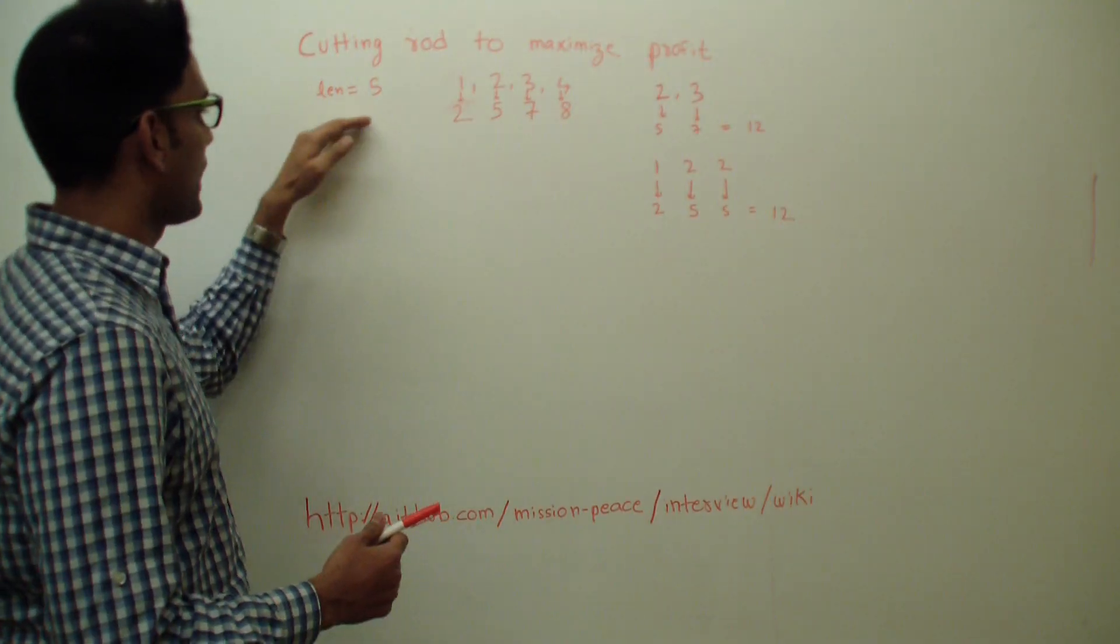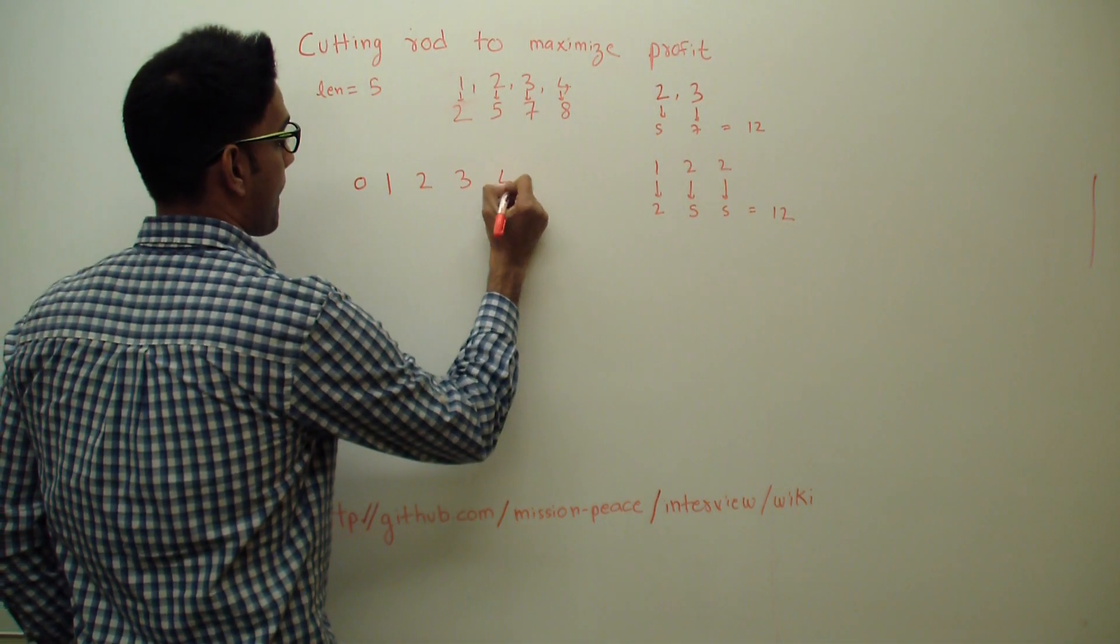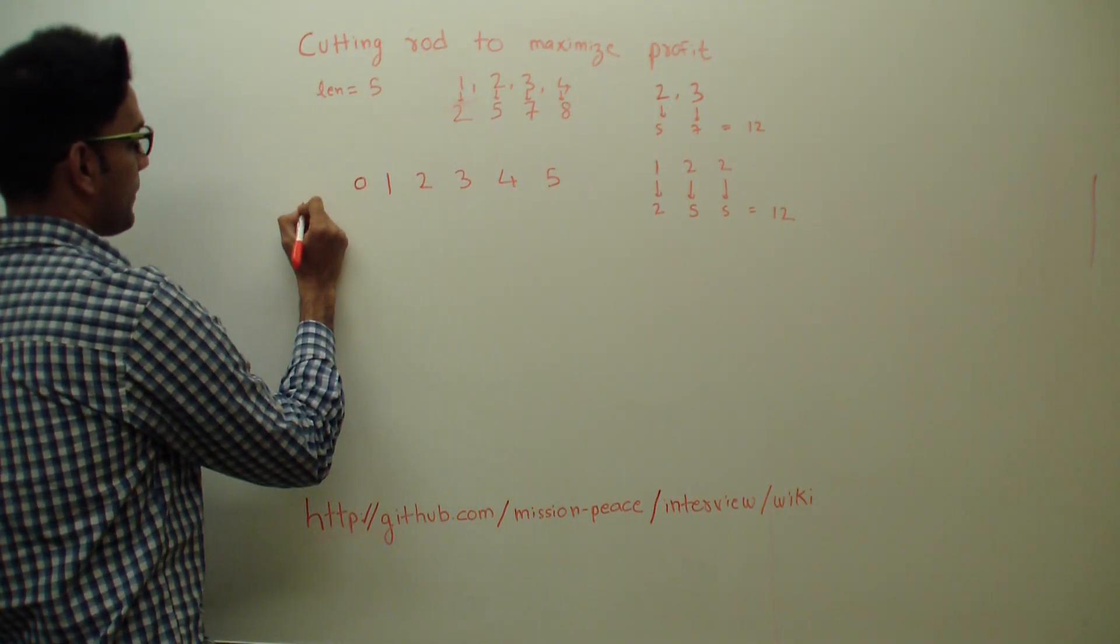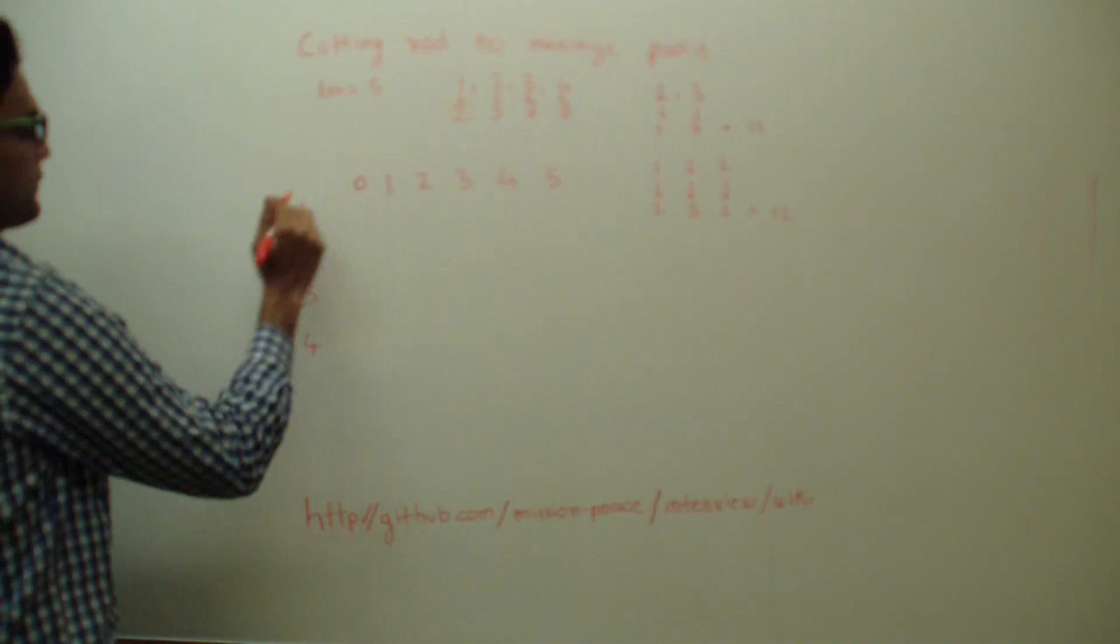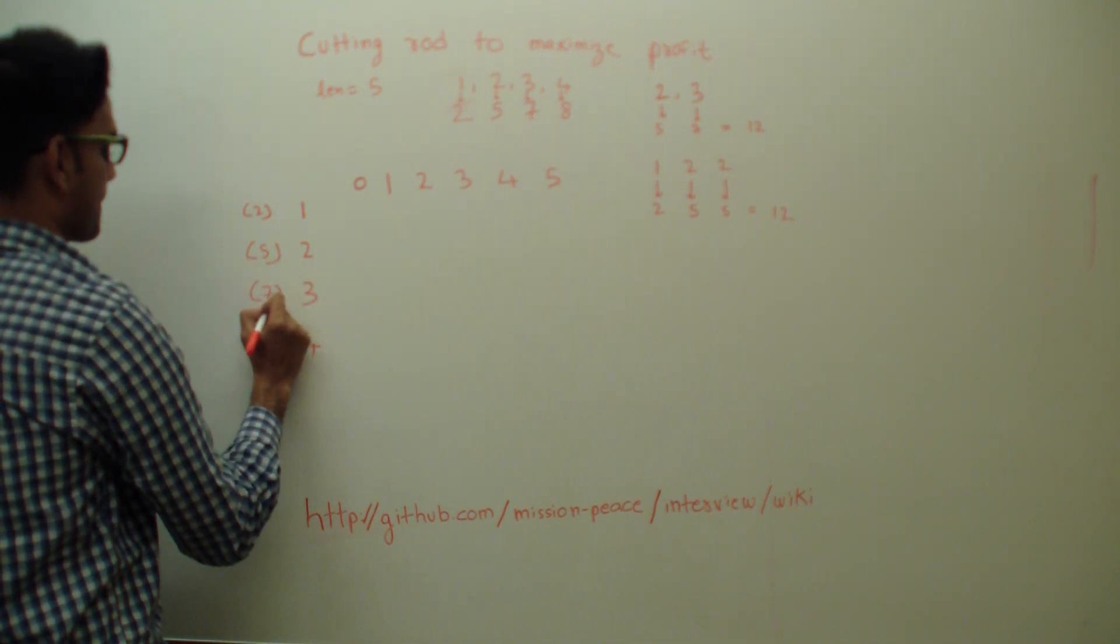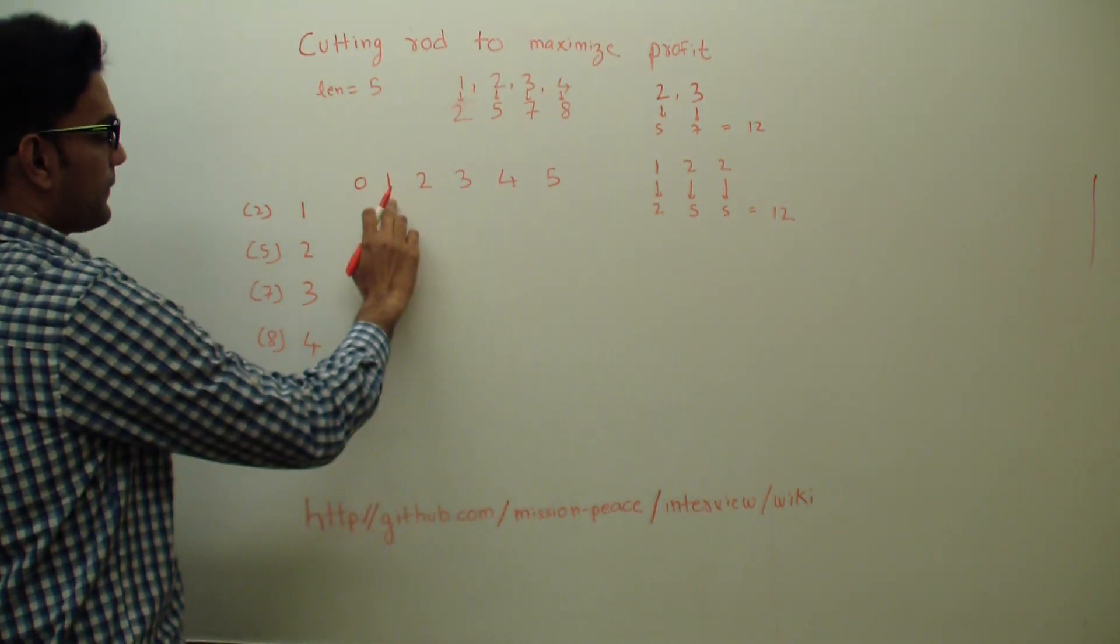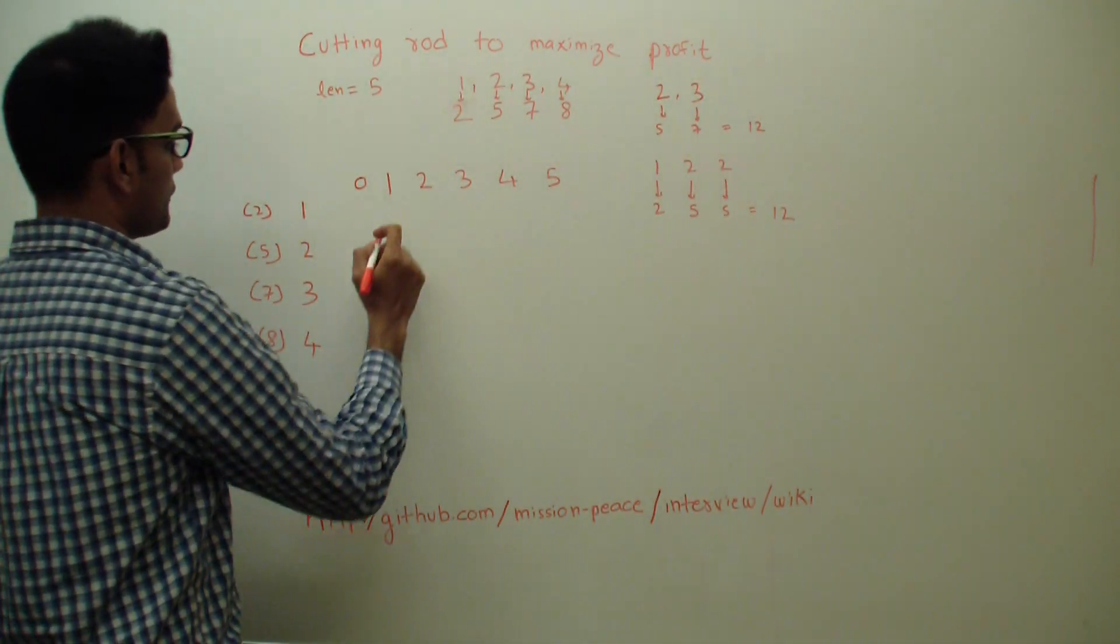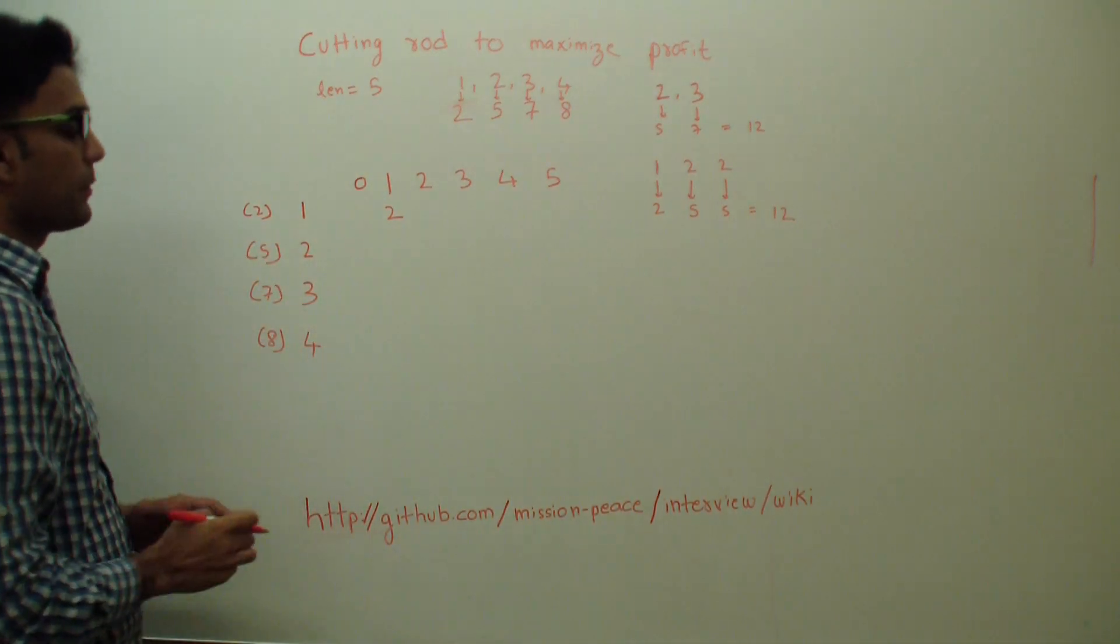So on the first row we'll have the total length from zero to five and here we'll have the individual lengths they're selling at in the market. Here we'll also write the profit, the valid profit you can make by selling them. Alright, let's start from this point. If you have a rod of length one and you can only cut it one way, how much total profit you have?